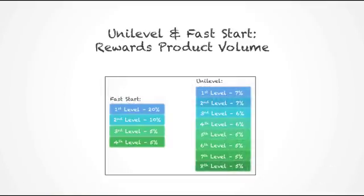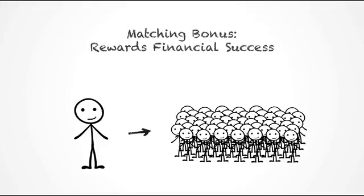The Unilevel and the Fast Start are the way that we reward our associates for enrolling new people with True Vision and encouraging them to purchase True Vision products. The check matching bonus is a way for us to reward those who help their people make money with True Vision.